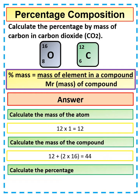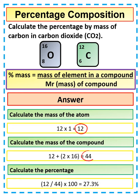Finally, if we calculate the percentage, all we need to do is take the 12 that we've worked out as the mass of carbon, divide that by the 44 which is the mass of the compound, and times that by 100.